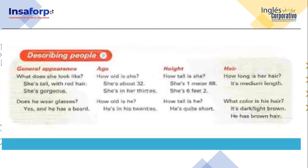For height: How tall is she? Or, how tall is he? Para preguntar acerca de la estatura, utilizamos esta pregunta. She is one meter eighty-eight. She is six feet two. He is quite short — un poco bajito de estatura. For hair: How long is her hair? It is medium length. What color is his hair? Is it dark brown or light brown? He has brown hair — you can use the verb 'has.' His hair is red, we can say he has red hair. Or, his hair is long, we can say he has long hair.